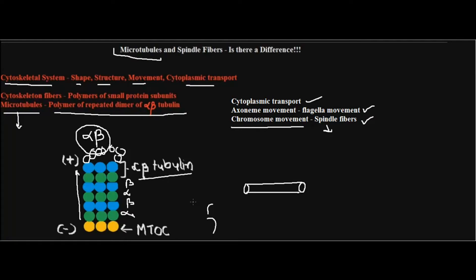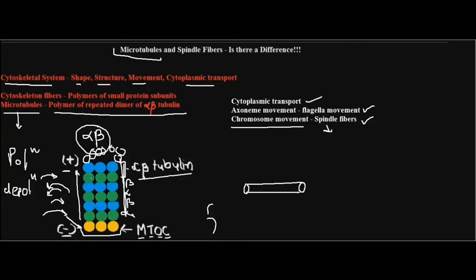The arrangement of alpha-beta dimers in the cell is not random — there has to be a specific site where they start assembling. That landmark is provided by the microtubule organizing center, or MTOC, which acts as the nucleation center. The growing end of the microtubule is called the plus end, and the MTOC end is the minus end. Addition of dimers is polymerization, increasing length; removal is depolymerization, shortening the microtubule.